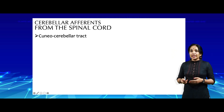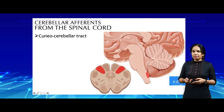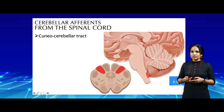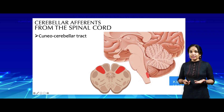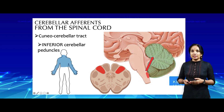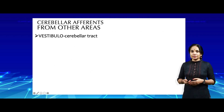The cuneo-cerebellar tract caters to the upper part of the trunk and the upper limbs, and it originates from the cuneate nucleus. The cuneate nucleus — the highlighted region in a medullary section — with the gracile nuclei in the center. The cuneo-cerebellar tract enters the brain stem and enters the cerebellum via the inferior cerebellar peduncles, providing information from the upper part of the trunk and the upper limbs.